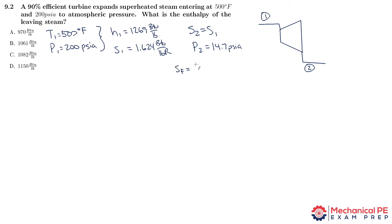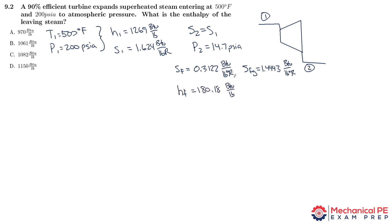From the saturated steam table at 14.7 psia: sf is 0.3122, sfg is 1.4443, hf is 180.18, and hfg is 970.07. The first thing we're going to do is find the quality at state 2 — this is state 2 ideal, based on the assumption that the entropy at state 2 equals the entropy at state 1.